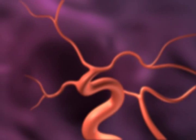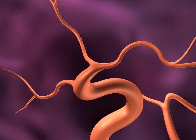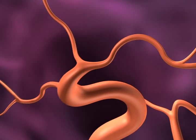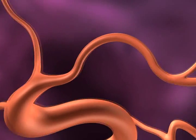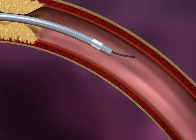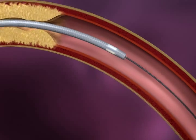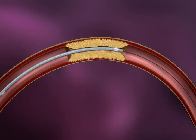The Wingspan Stent System is designed to access tortuous neurovascular anatomy. Use a .014 inch exchange length guide wire to cross the stenosed lesion. A microcatheter can be used to obtain access if desired.